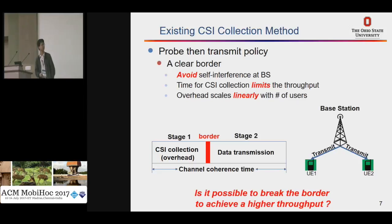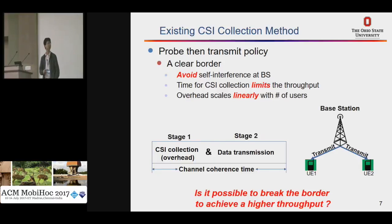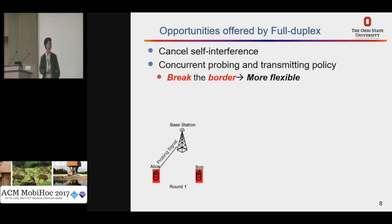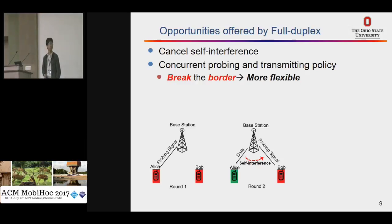So, there's a question: is it possible to somehow blur the border between these two stages to achieve higher throughput? Here's the opportunity offered by full-duplex. In this example, for the first slot, we have two users and one base station, and one user is sending a pilot signal to the base station — nothing new.